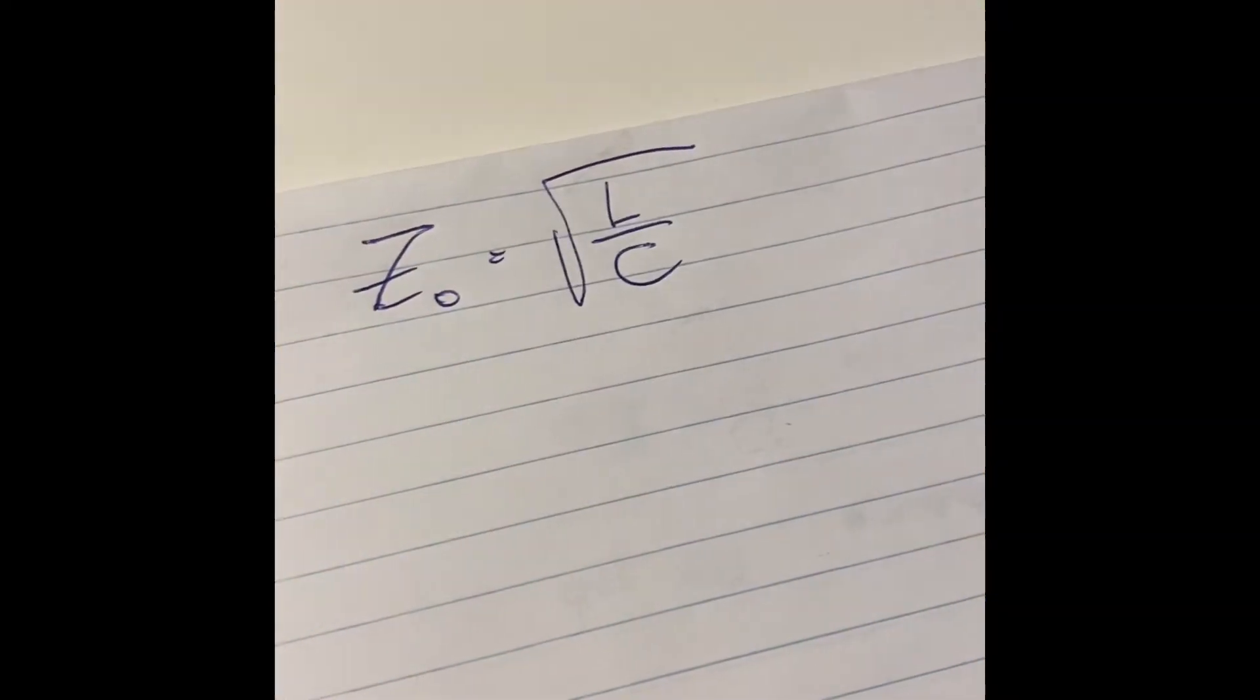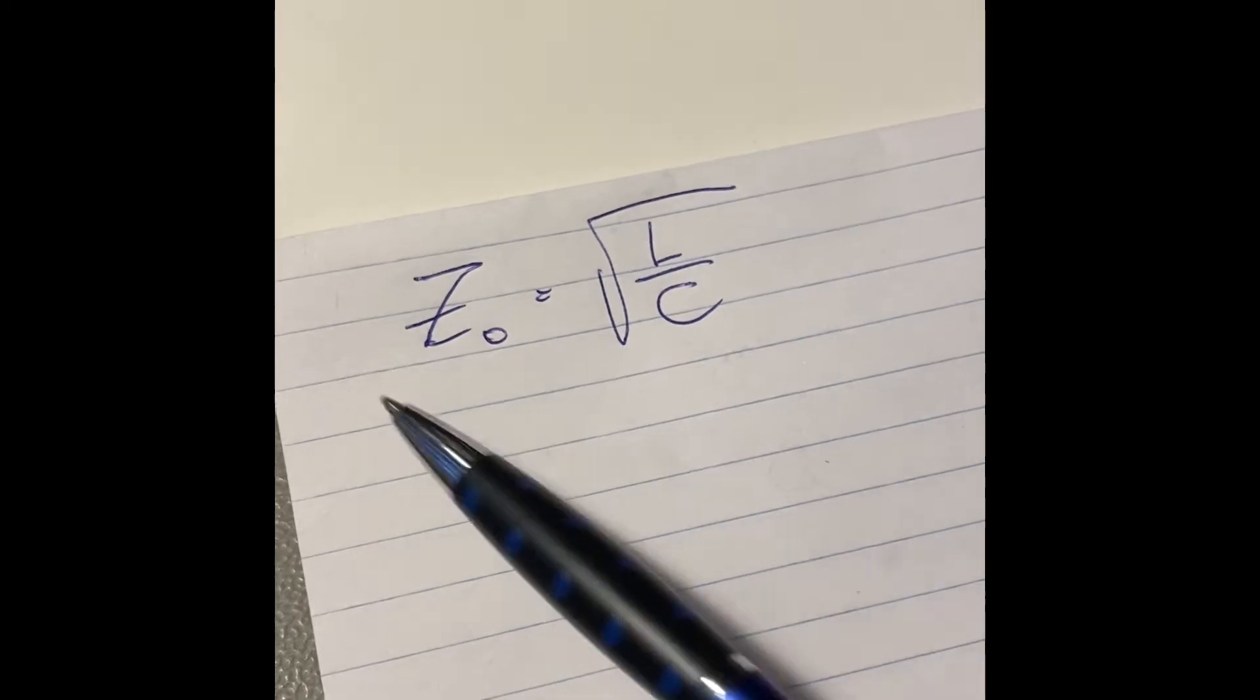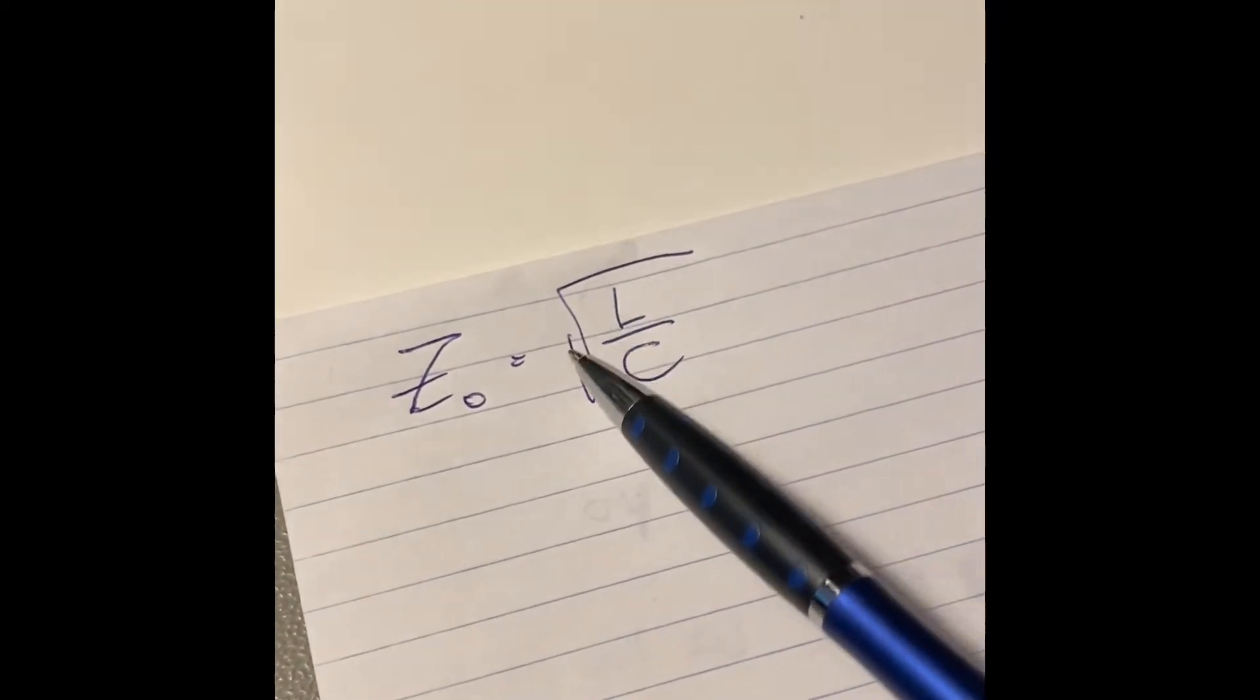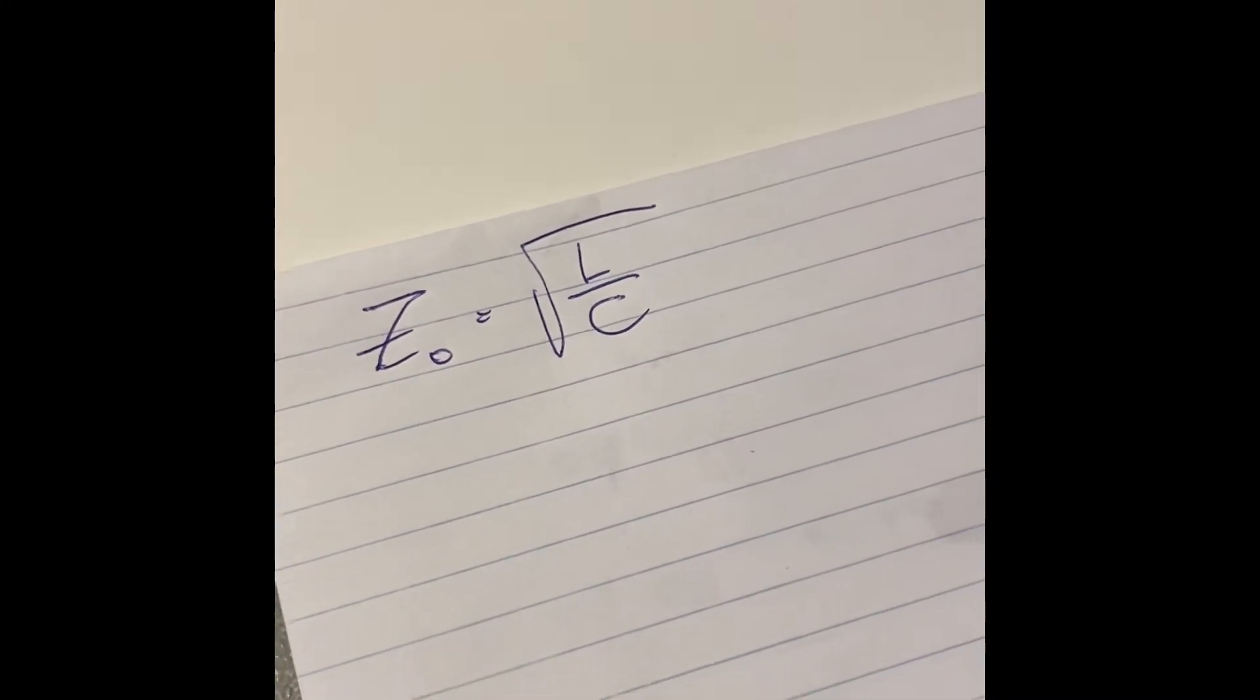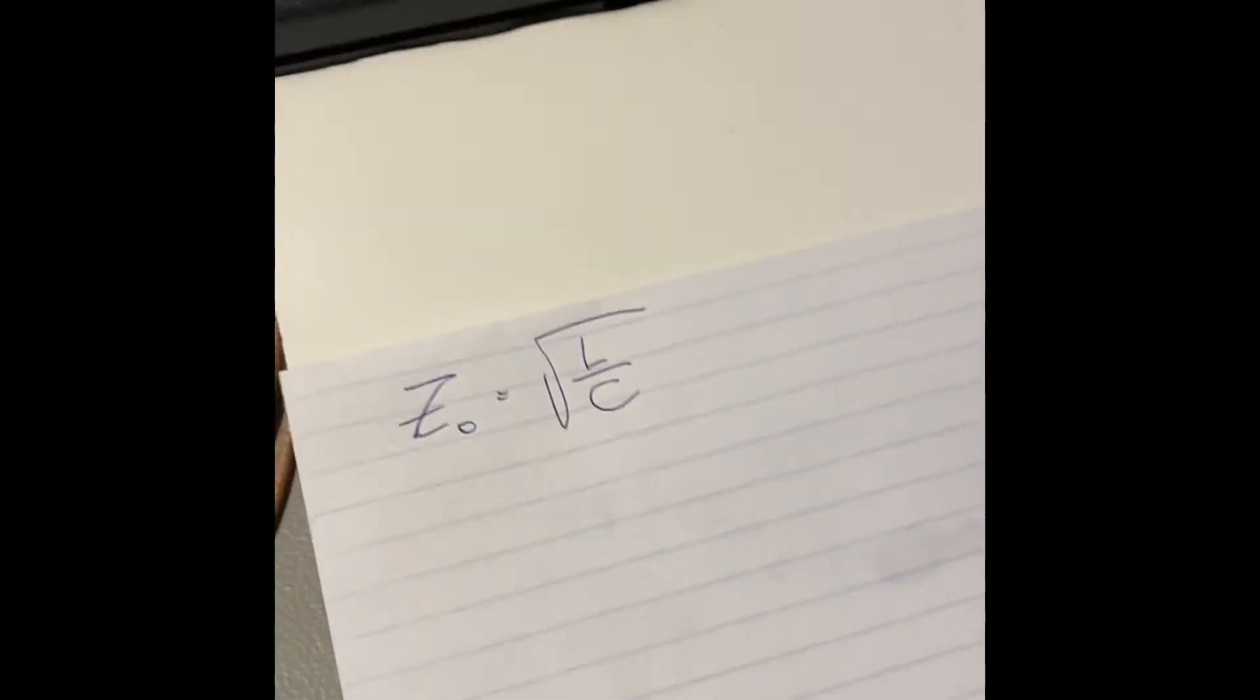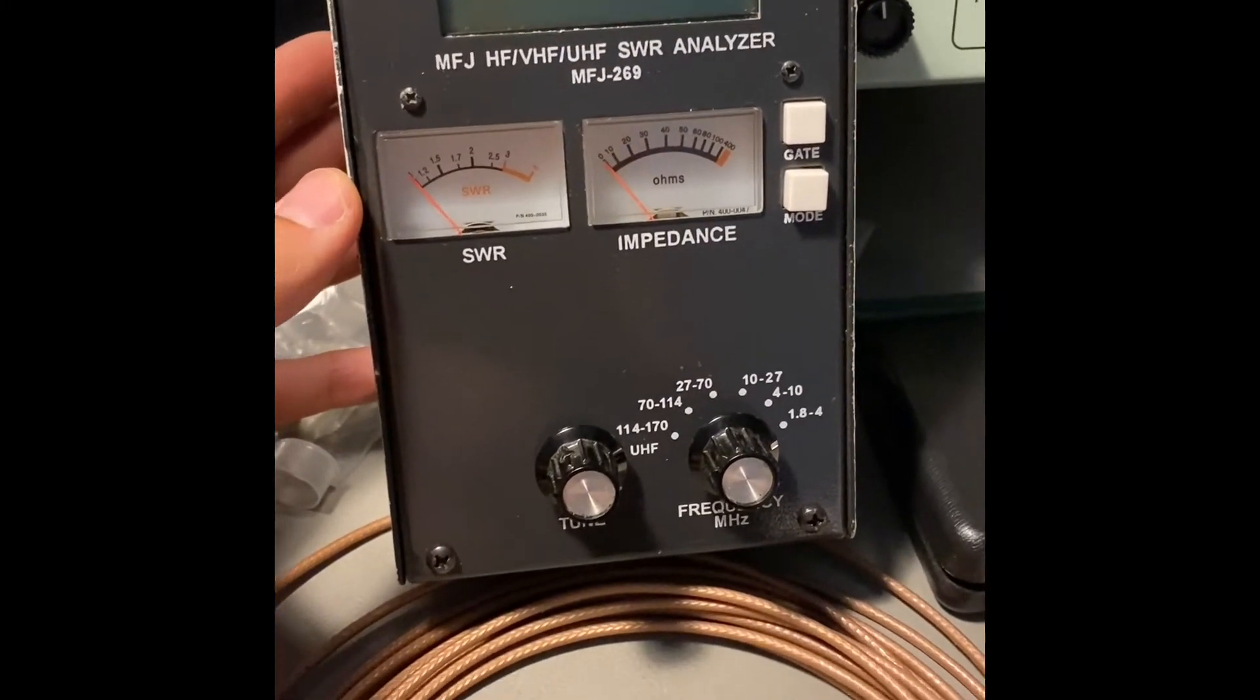Basically we're going to use a simple formula. The characteristic impedance of a line like this is the square root of the ratio between its inductance and its capacitance, so we just need to measure these two factors.